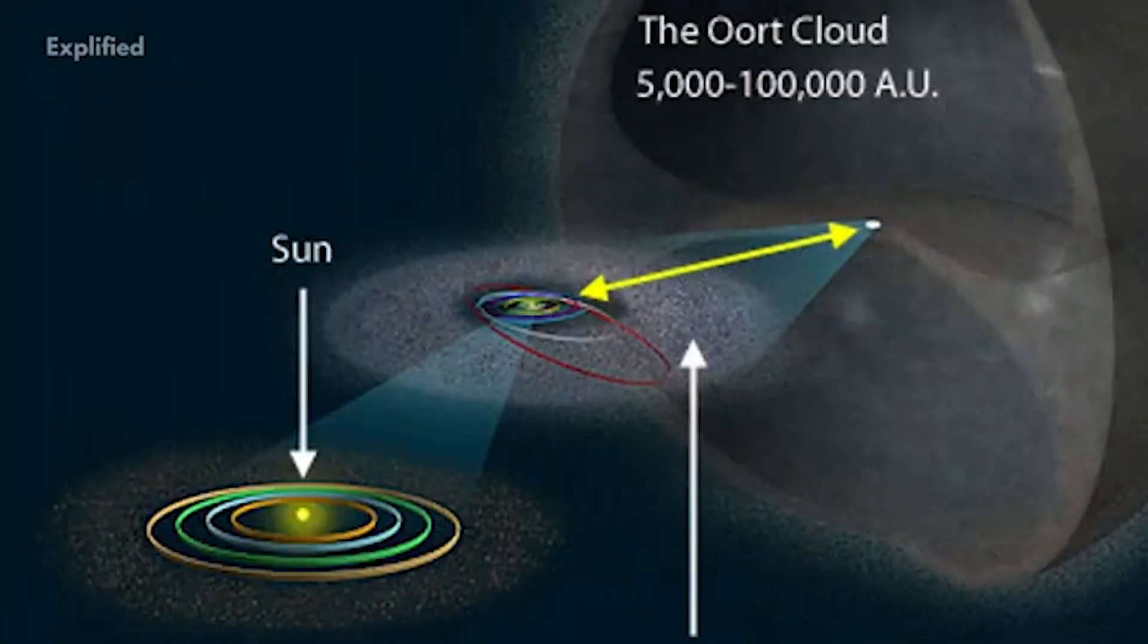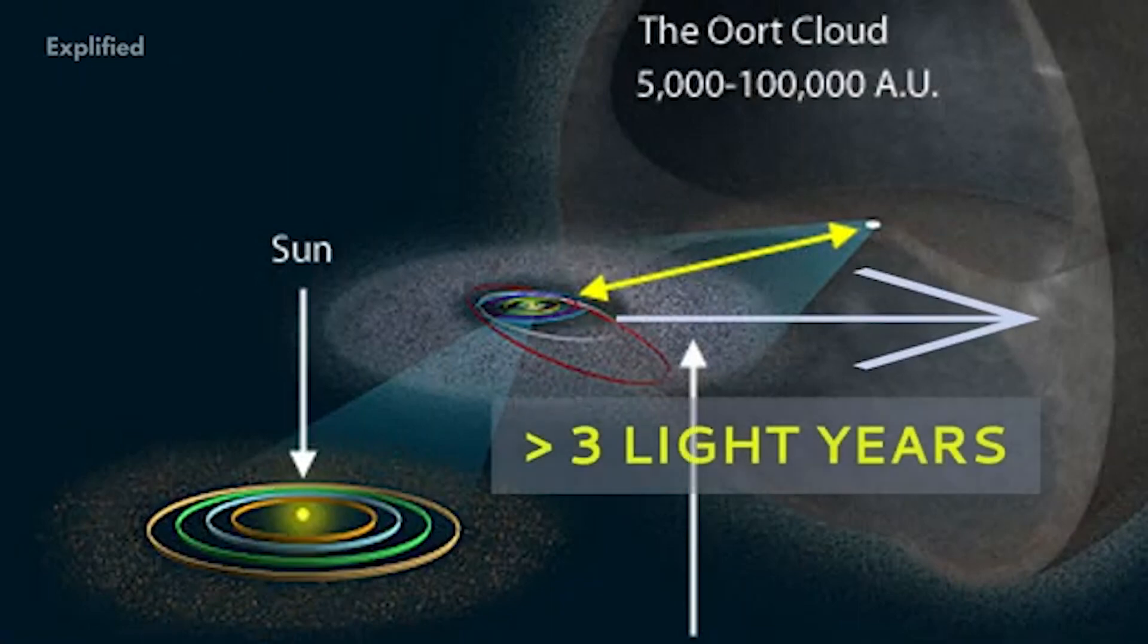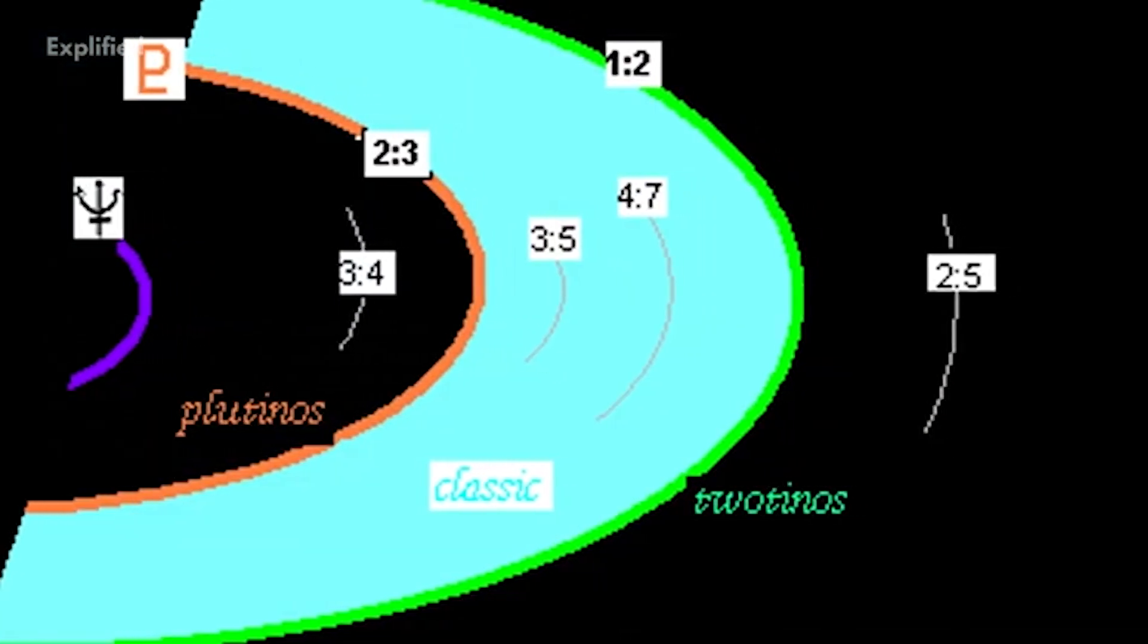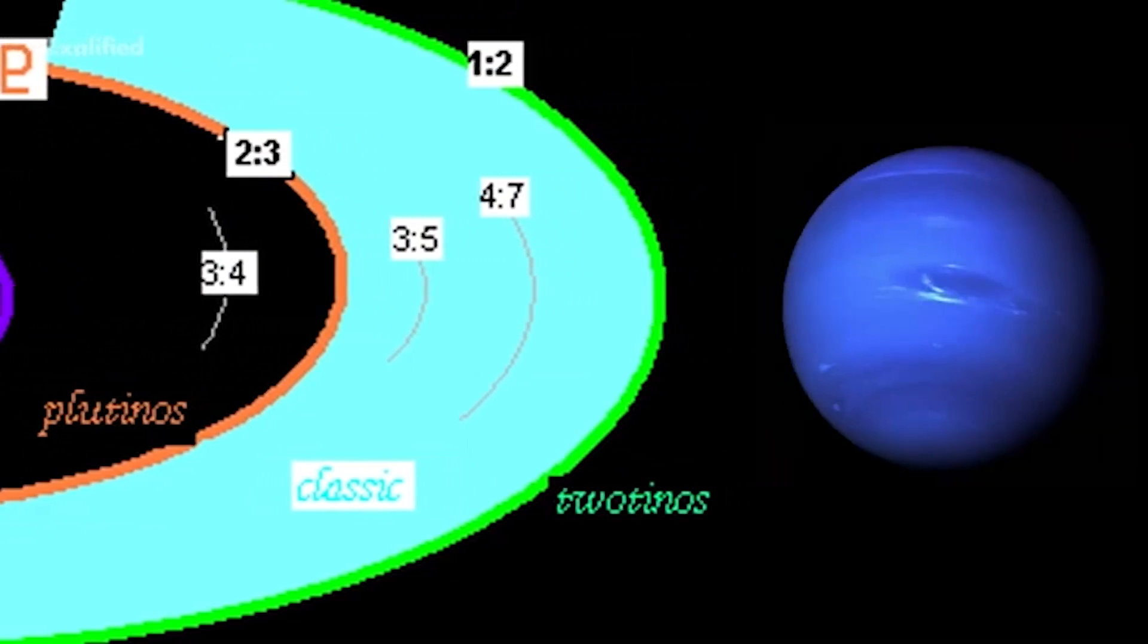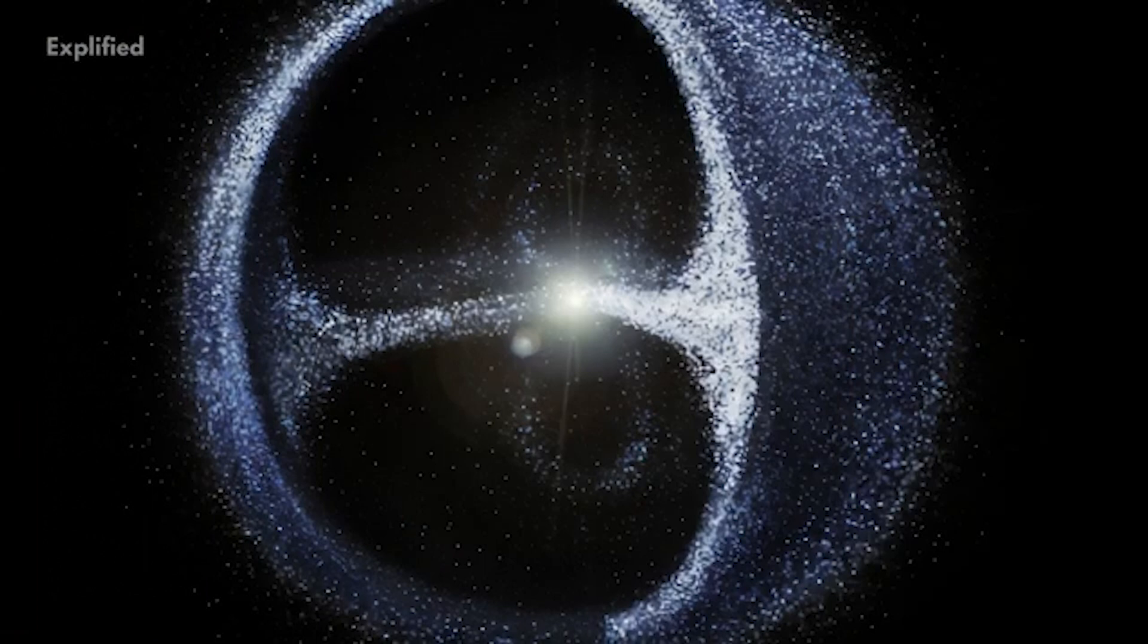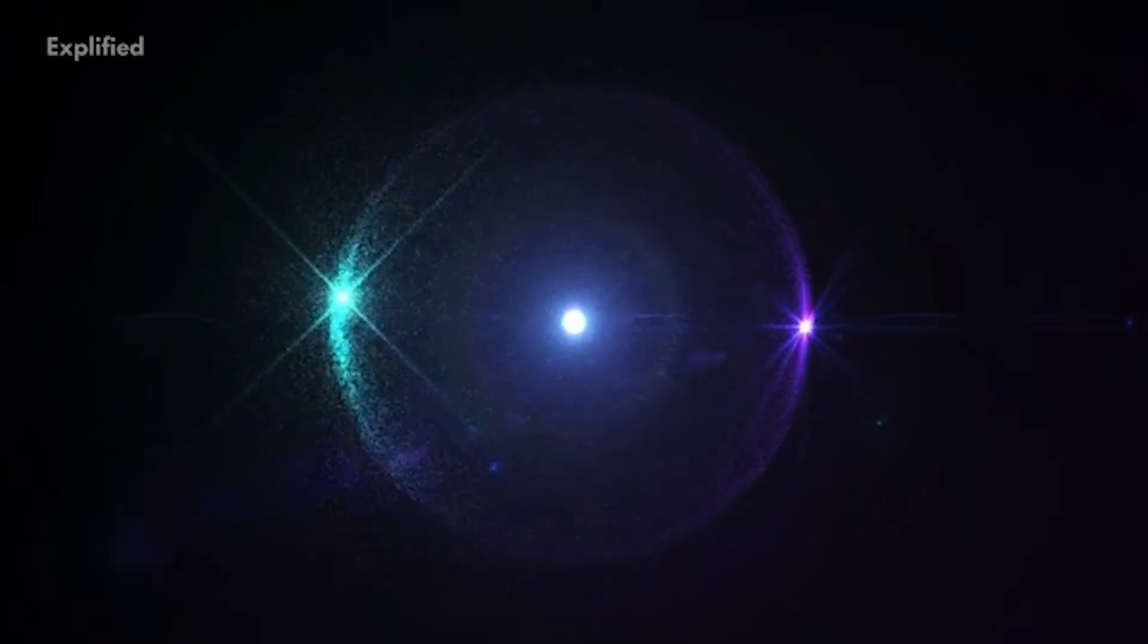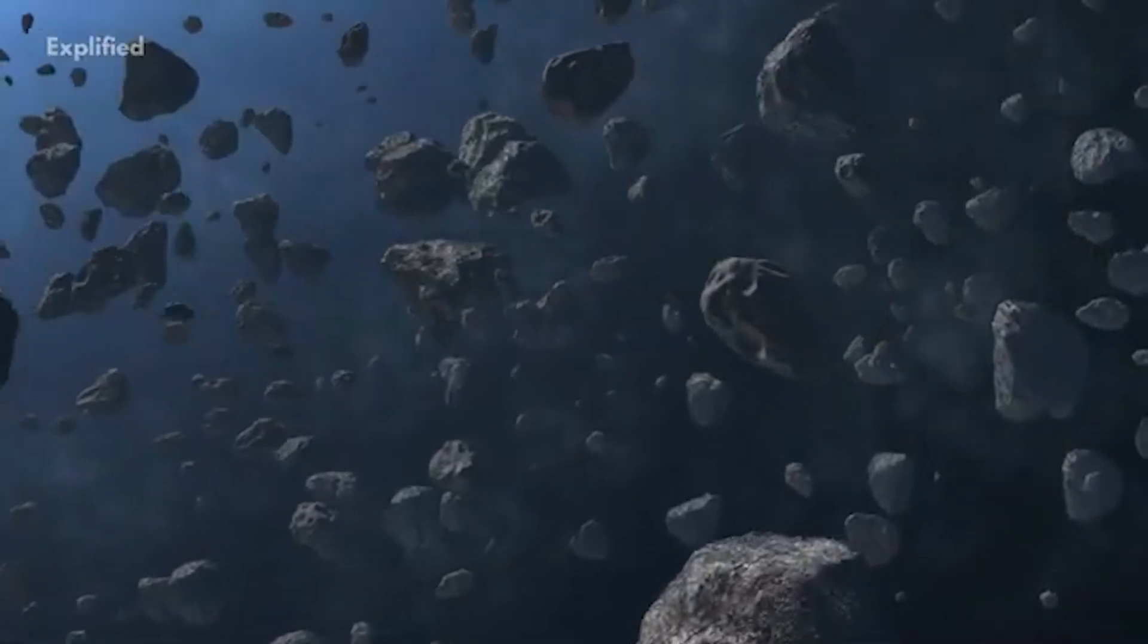Unfortunately the Oort cloud planet from Raymond's team couldn't be the same Planet X that Brown and Batygin were going hunting for. Although the supposed Oort cloud planet could be far away and have stretched out and eccentric orbit, that's where the similarities end. Oort clouds planets in our simulation would be much more distant than the proposed Planet 9 orbit, at least 10 times further away.